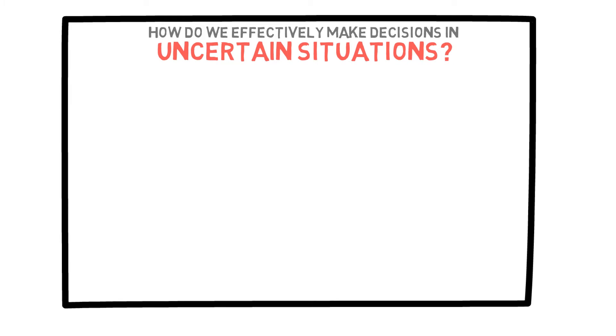Now, we are moving closer to dealing with the big question of this course. How do we effectively make decisions in uncertain situations? In order to do this, we need one more tool from probability theory, which is the concept of random variables and their expected values.